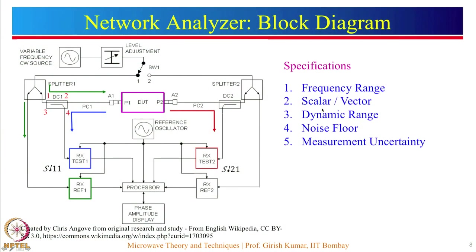These are some important specifications for a network analyzer system. First is the frequency range, specifying the range of frequency values displayed. Second is the type — SNA or VNA. Third is the dynamic range, defined as the difference between the output power levels for open or short load, close to 0 dB, and that of a matched load, typically 50 ohms. Fourth is the noise floor, and fifth is measurement uncertainty — errors in measurements.